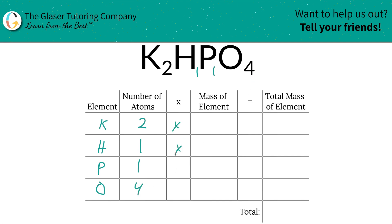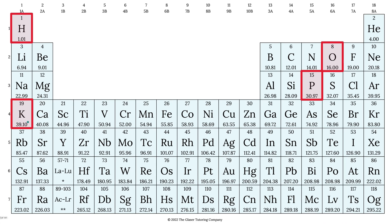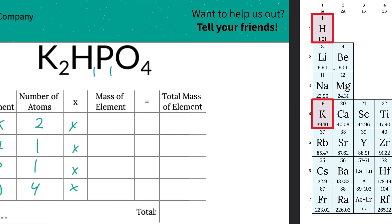Then we're going to take those number of atoms and multiply them by the mass of each particular element. That's where we got to go to the periodic table. Potassium is 39.10, hydrogen is 1.01, phosphorus is 30.97, and oxygen is 16.